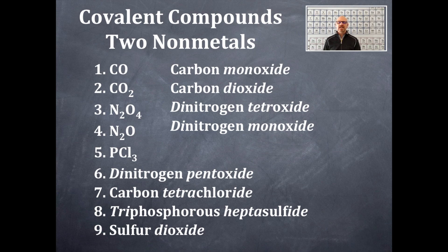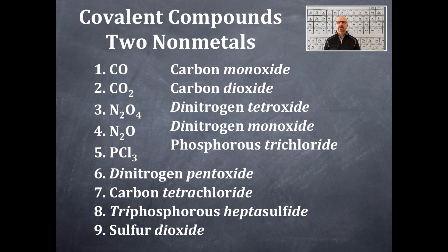Let's try number five. You have a phosphorus and a chlorine. The least electronegative is written first — the one furthest from fluorine — that's why the phosphorus is written first, and chlorine is written second. How many phosphorus? One. You don't write a prefix when you have only one. The second element is chlorine, and you have three of them. You always use a prefix on the second element, and three chlorines gives us tri. So it's going to be phosphorus trichloride.